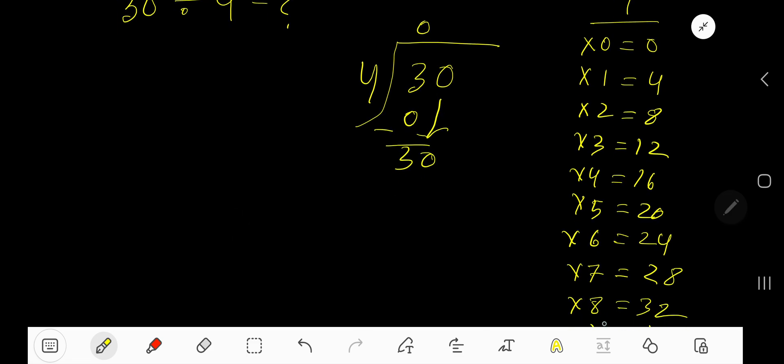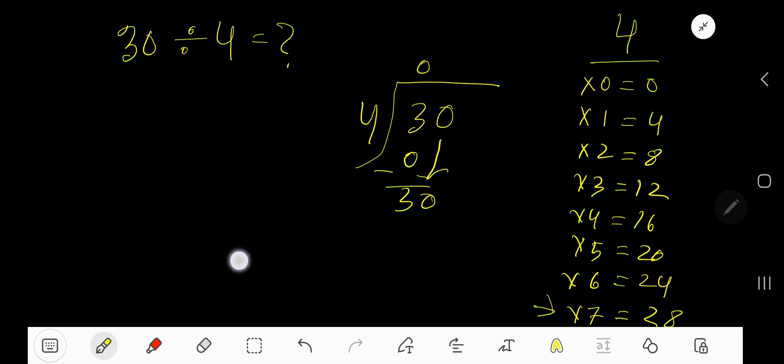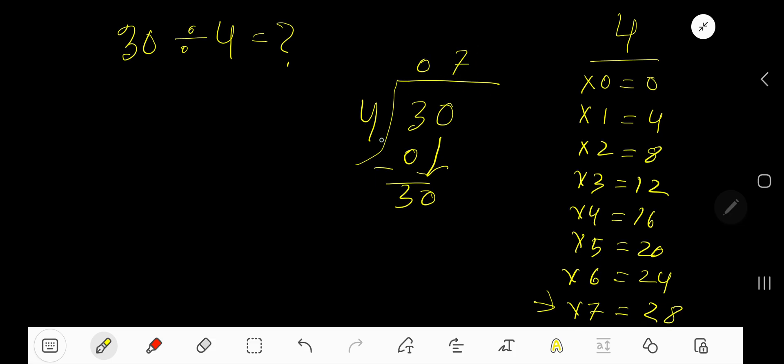Look, 4 times 8 gives you 32, which is greater, so we have to consider 7 times. 7 times 4, or 4 times 7, is 28. Subtract. 2. So the quotient is 7, and 7 remainder 2 is our answer.